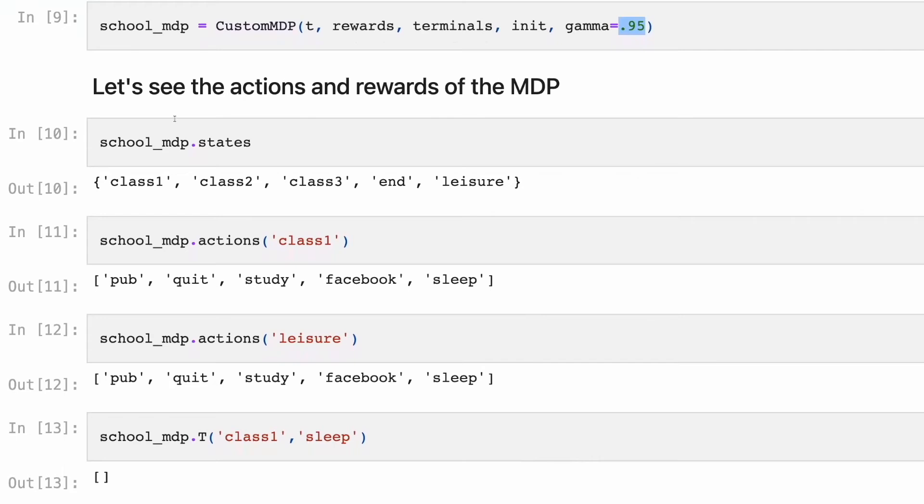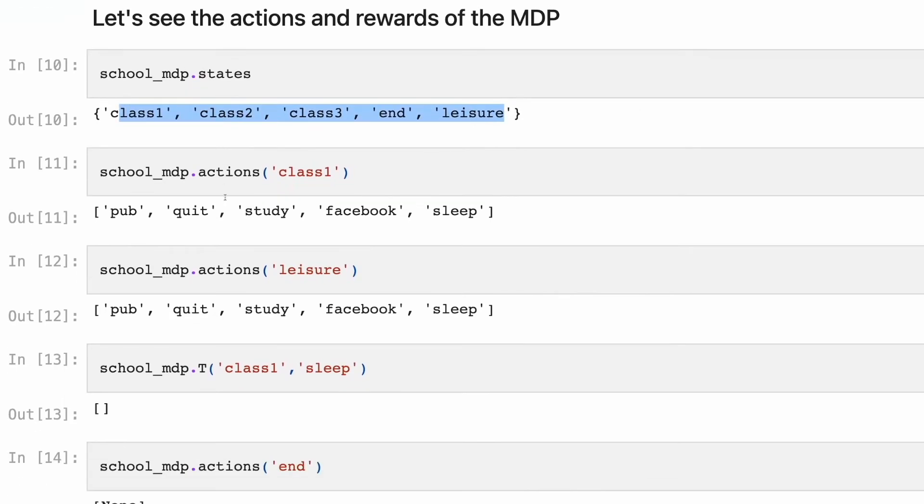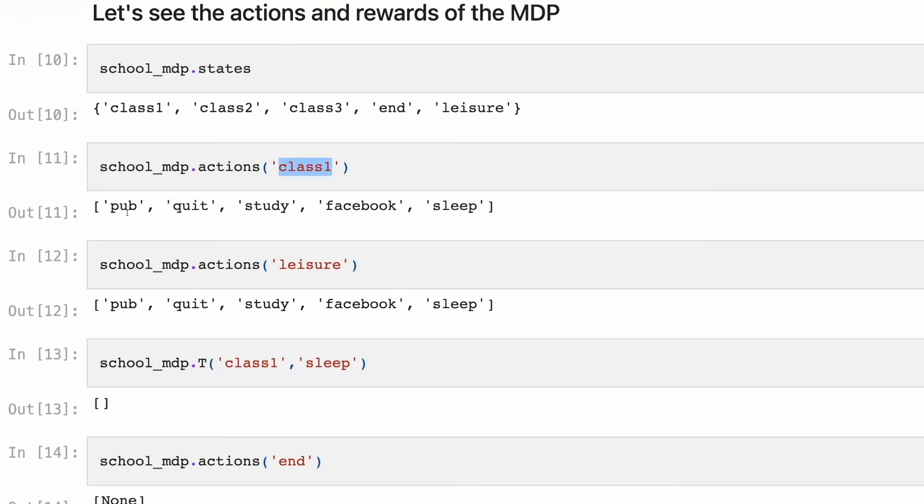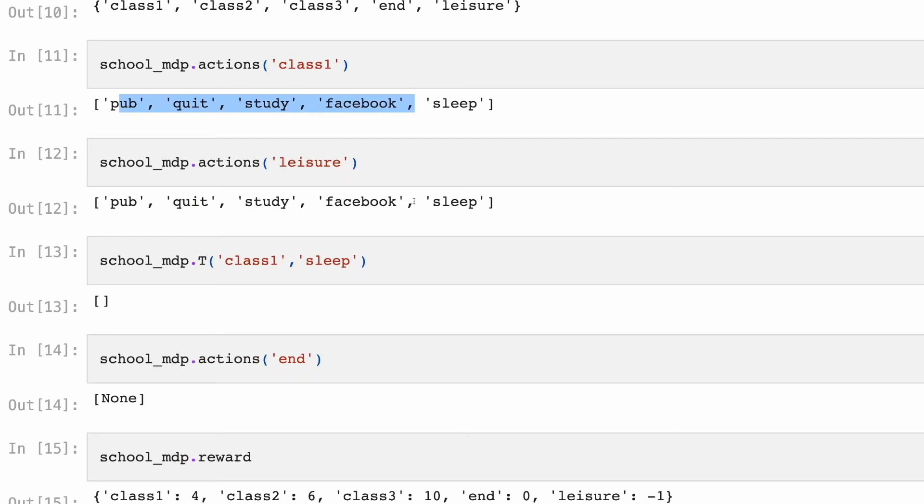Now we're just checking what we have. We have the following set of states. One, two, three, four, five states. We have different actions for different states. As I told you, due to the transition function, some of them are simply unavailable because they don't have a chance to transit.